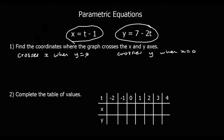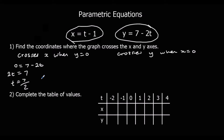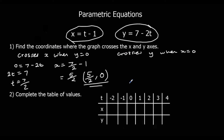To find where it crosses the x-axis, we substitute y equals 0 into the y equation: 0 equals 7 minus 2t. Adding 2t to both sides gives 2t equals 7, so t equals 7 over 2 or 3.5. We then substitute t into the x equation: x equals 7 over 2 minus 1, which is 5 over 2 or 2.5. So it crosses the x-axis at (5/2, 0).